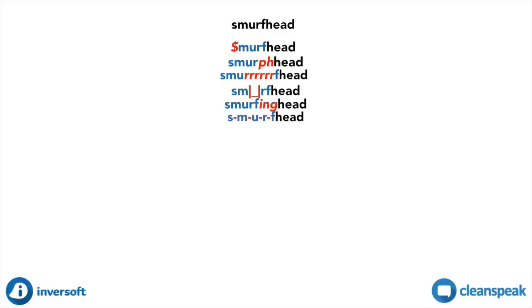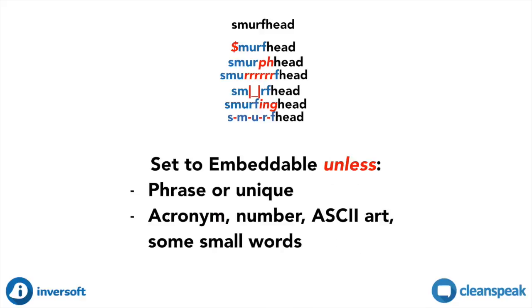Most entries in the CleanSpeak blacklist should be set to Embeddable. Exceptions include phrases and unique words that should be Distinguishable, and also acronyms, numbers, ASCII art, and some small words. For those cases, the safety checks for the Embeddable filter mode can still be too aggressive. That's where Non-Embeddable and Exact Match come in.